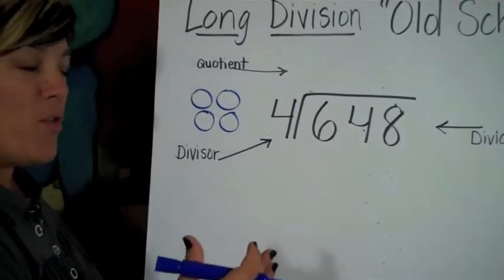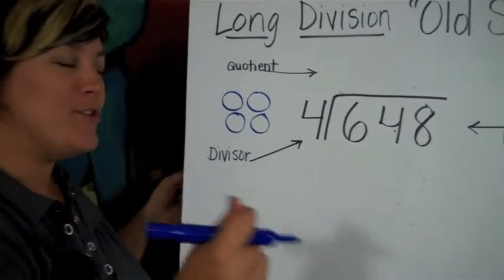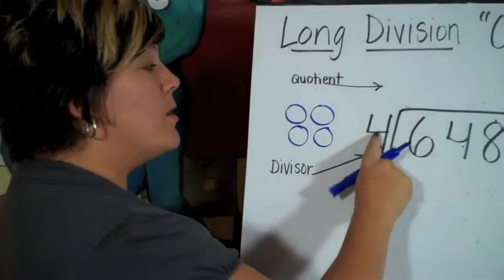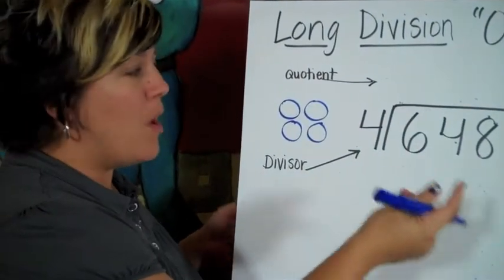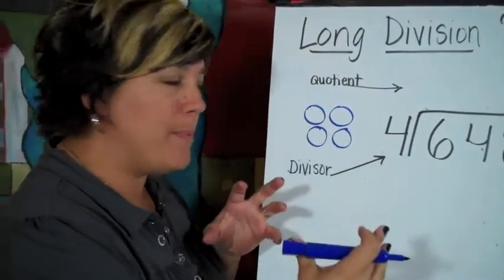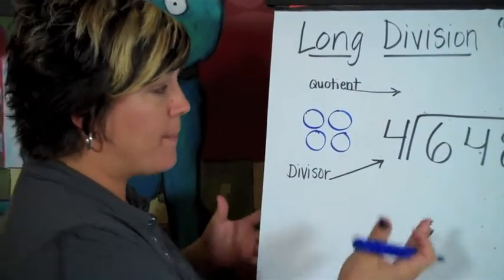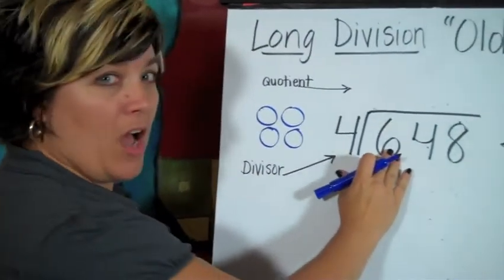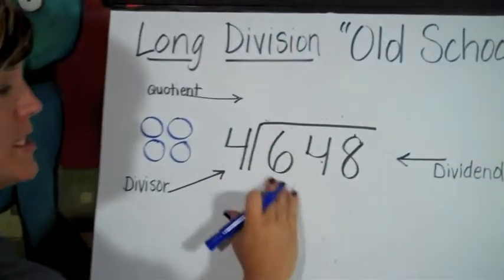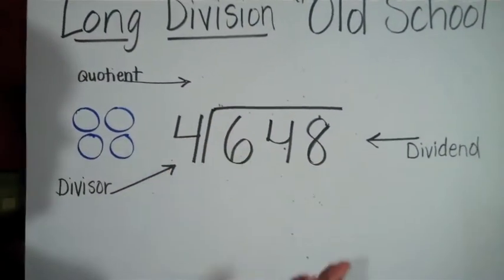So we're going to start the way we are used to thinking about it. We would say four goes into six one time. Well actually that's not what happens when you're thinking about the divisor as being four groups. What's actually happened is you're saying that you have six hundreds. So let's take a look at this first as we would if we were looking at place value.